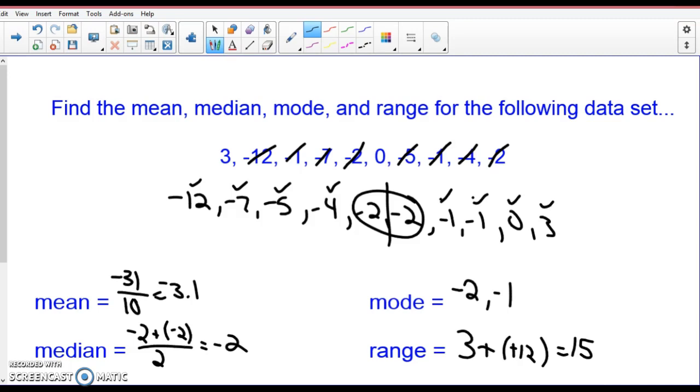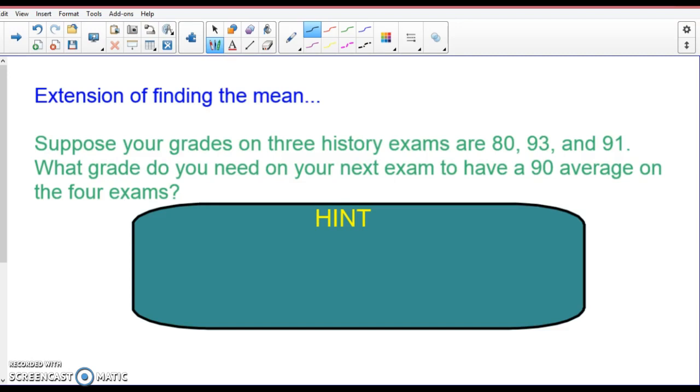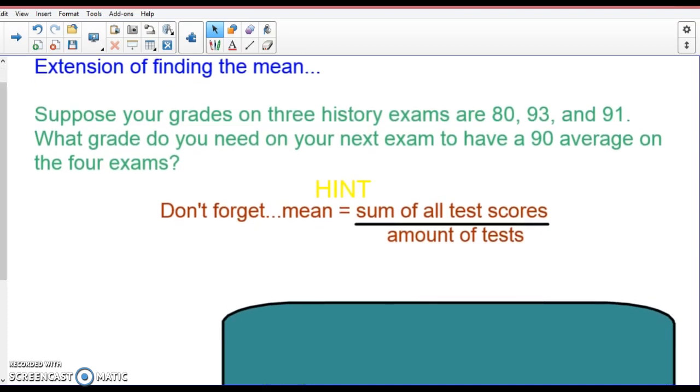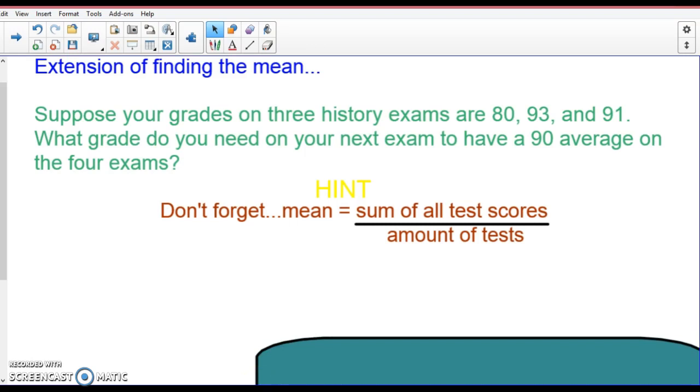Alright. Now, this is more of an algebra-based exam. It says, suppose your grades on three history exams are 80, 93, and 91. What grade do you need on your next exam to have a 90 average for your four exams? So, I'm going to move. Don't forget, the mean is the sum of all the tests divided by the amount of the tests. So, do we know what our fourth score is? No.